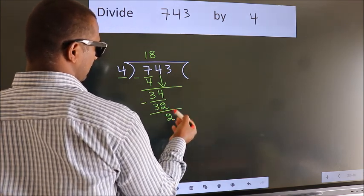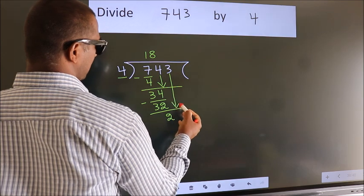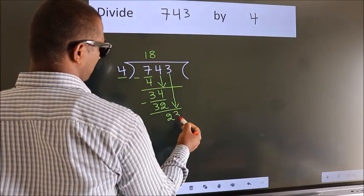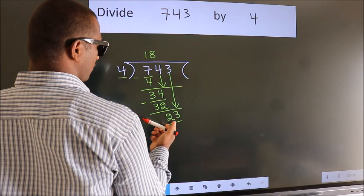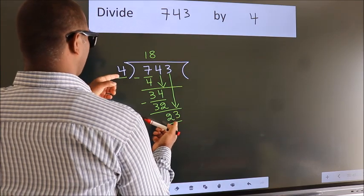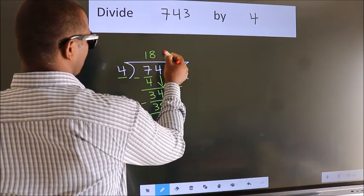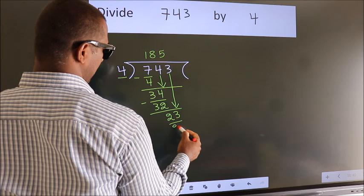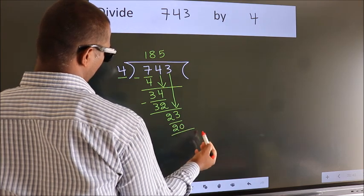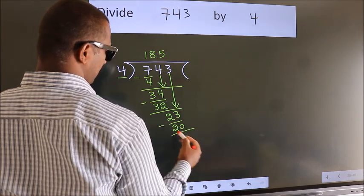After this, bring down the beside number, so 3 down, so 23. A number close to 23 in the 4 table is 4 5s, 20. Now we subtract, we get 3.